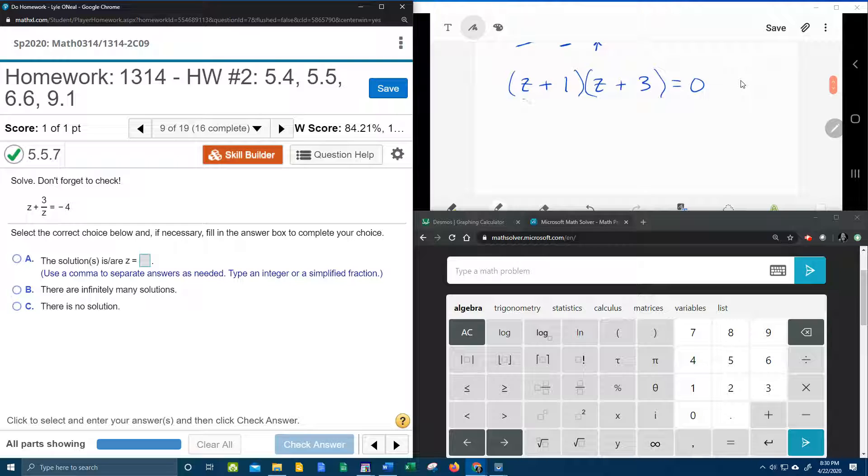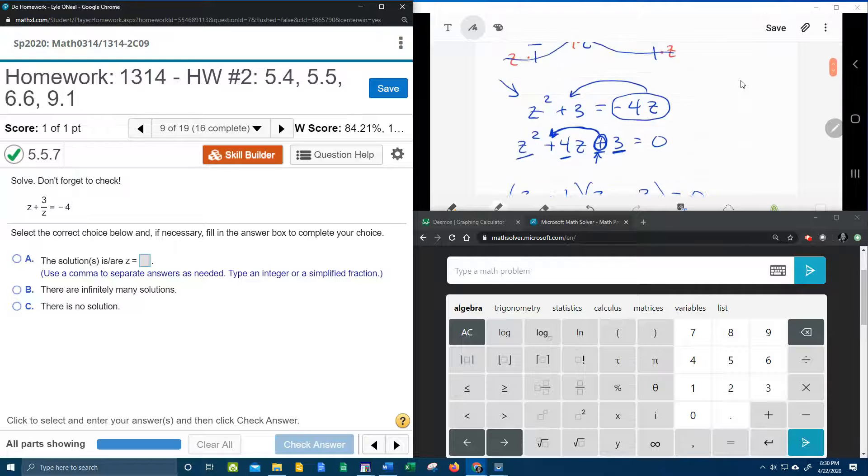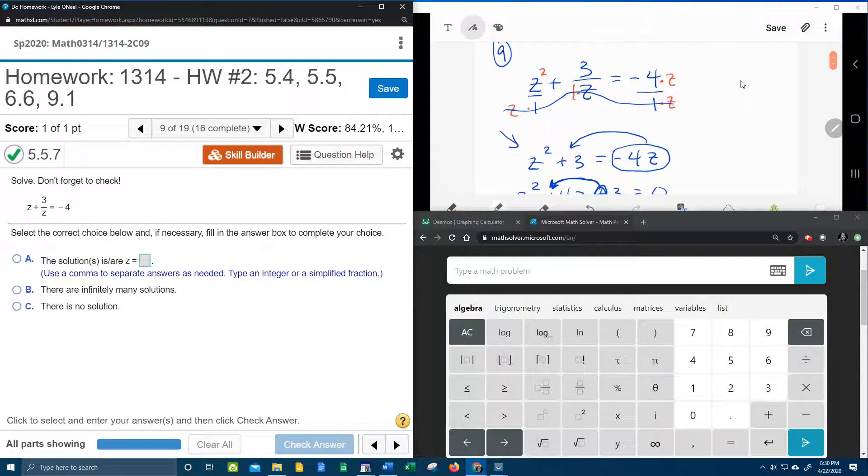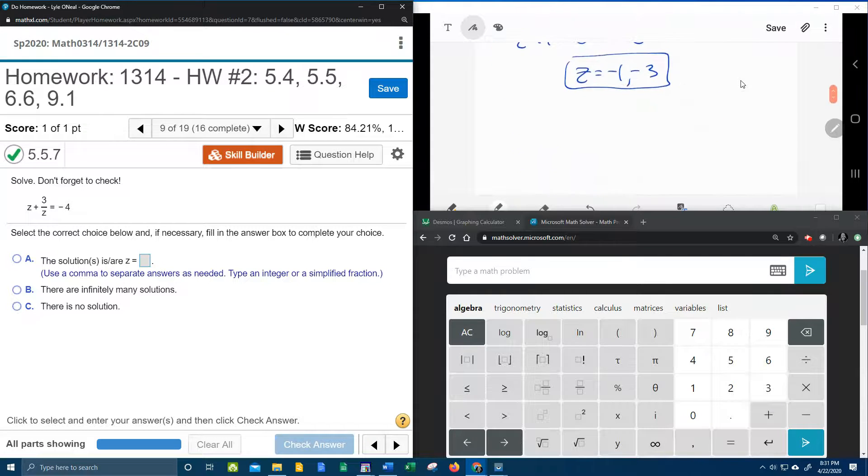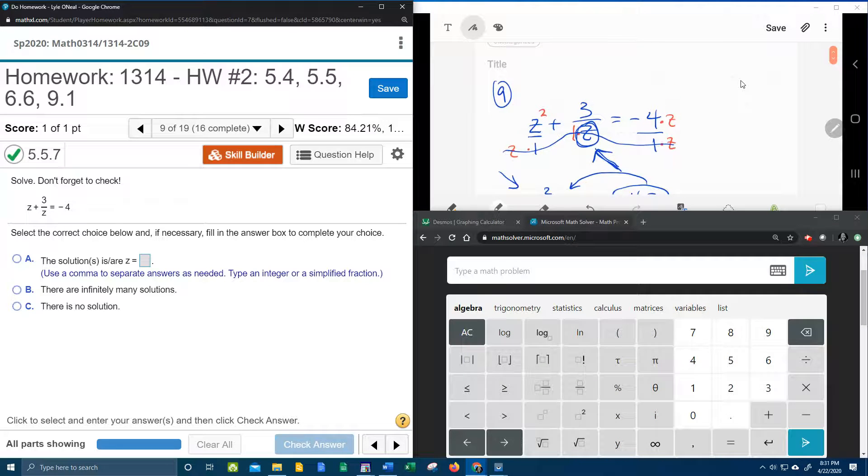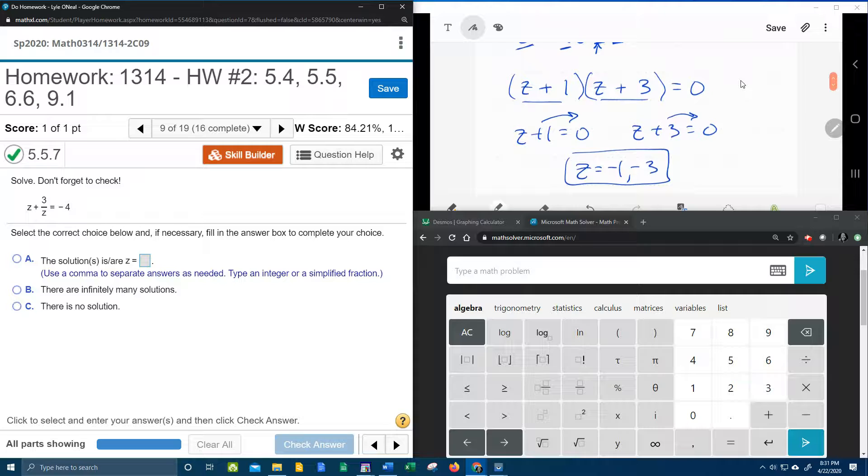So now that I have this factored, I'm going to set each factor equal to 0. And then solve. Moving the 1 and the 3, we're going to get z equal negative 1 and negative 3. And so I do get two solutions. Now to check, to make sure that those are acceptable, you need to go back to the original problem and make sure that plugging in either one of those answers will not make the denominator 0. So the only denominator that I had to begin with was this denominator of z. And if I plug in negative 1 and negative 3, they definitely don't make the denominator 0, so they're both acceptable answers.